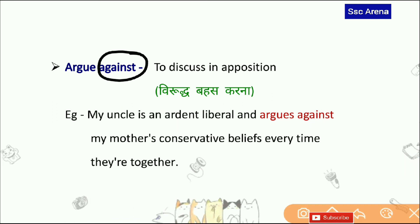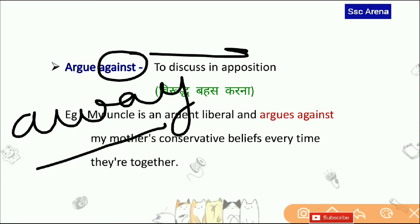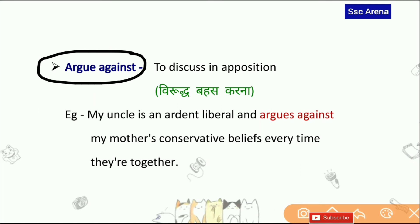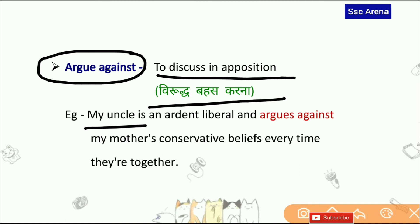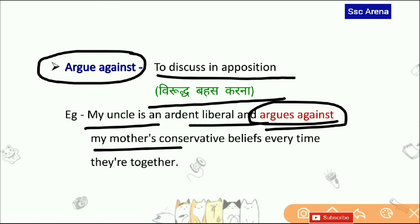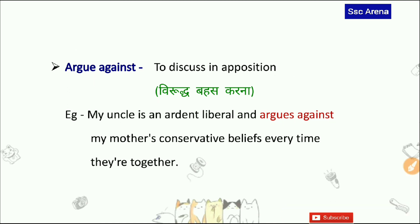Argue Against — जैसे Away का मतलब दूर रहना है, Against भी ज़्यादातर किसी के opposite जाने, बहस करने, conflict करने में use होता है। Argue Against का मतलब होता है to discuss in opposition — विरुद्ध बहस करना। My uncle is an ardent liberal and argues against my mother's conservative beliefs every time they are together। Argue Against का मतलब होता है बहस करना।